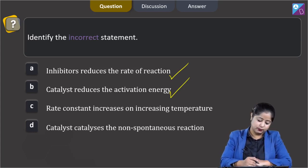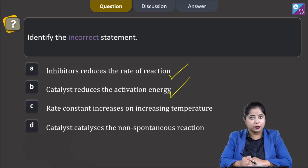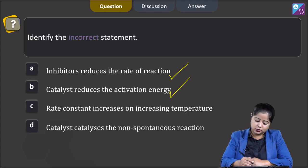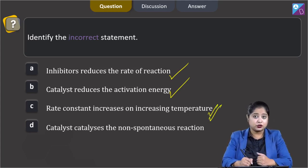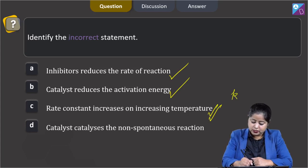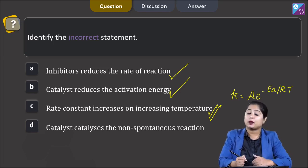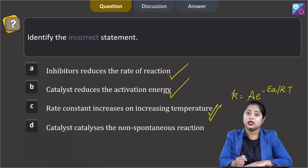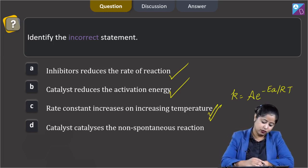Moving to the next statement: rate constant increases on increasing temperature. This is also a correct statement. The relation between rate constant and temperature is given as K = A·e^(−Ea/RT). That means on increasing temperature, the rate of reaction increases.